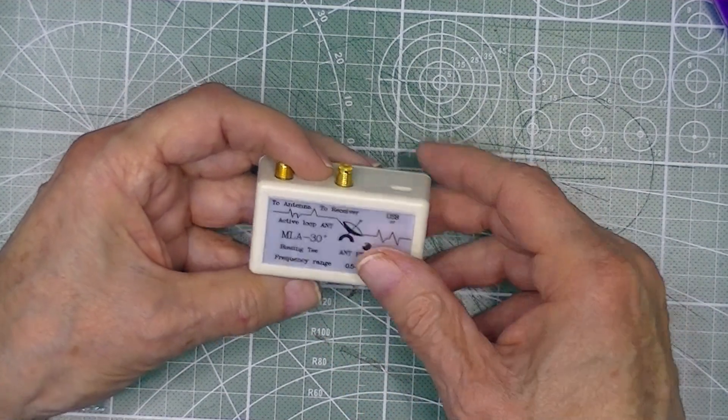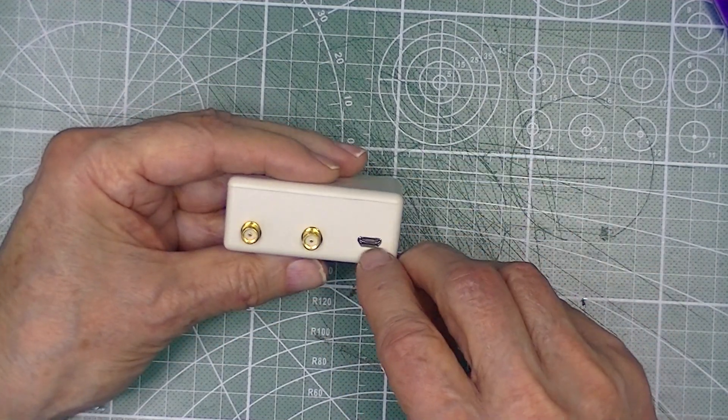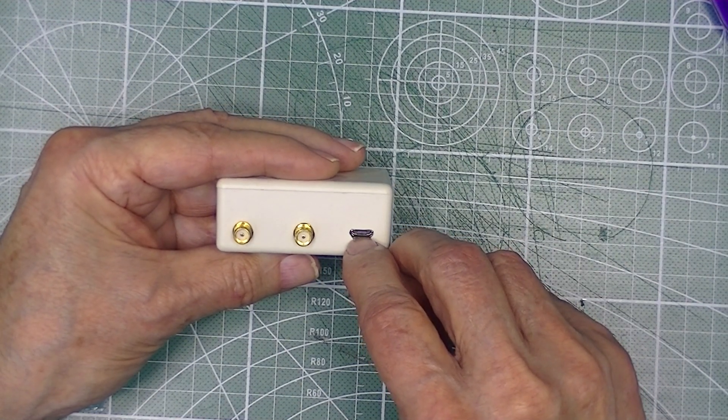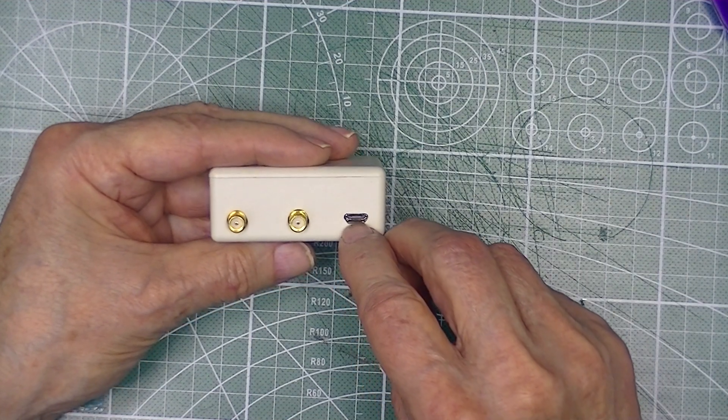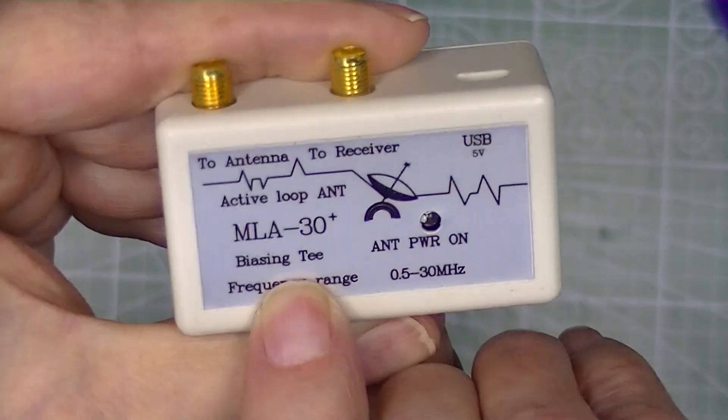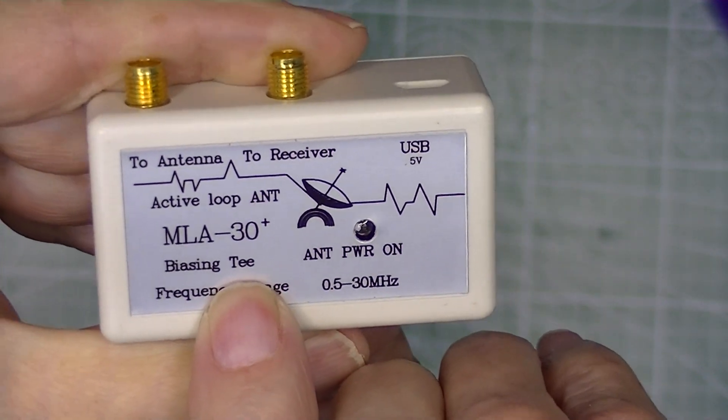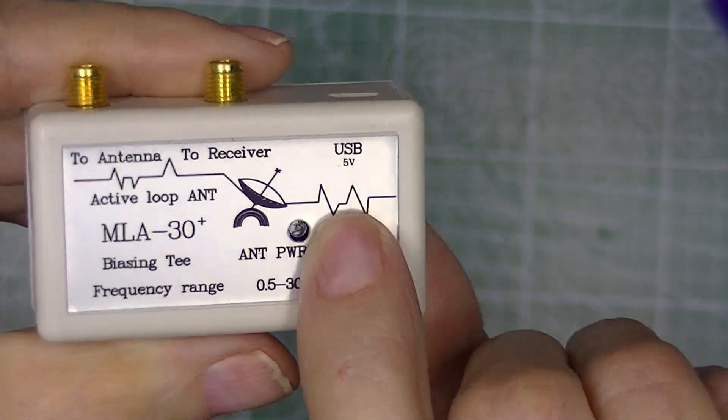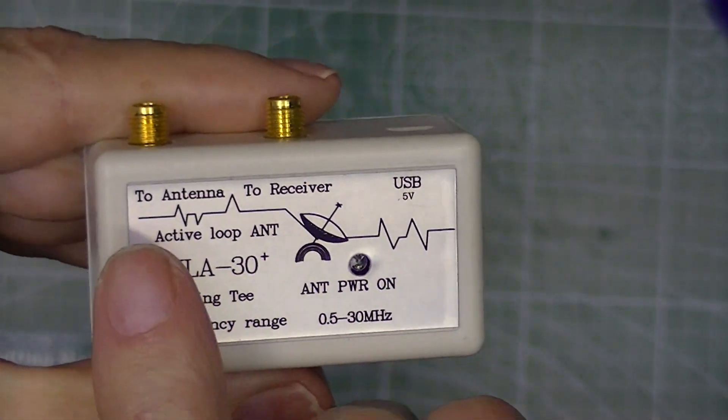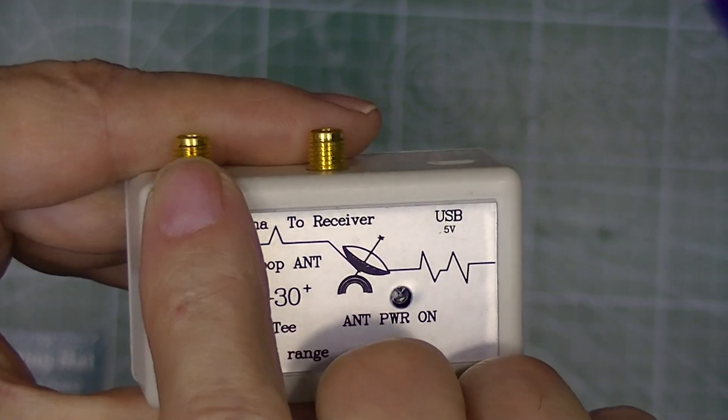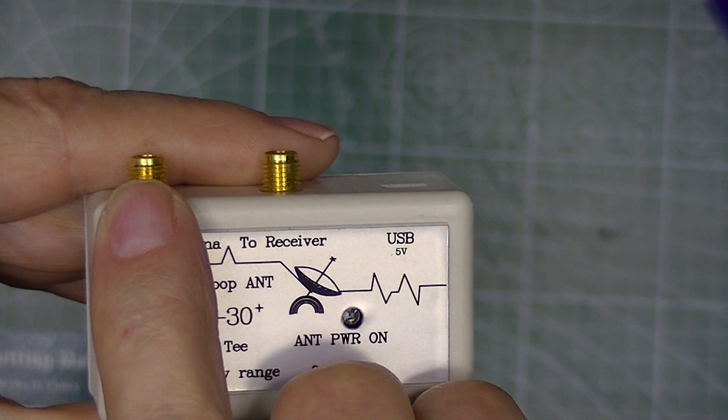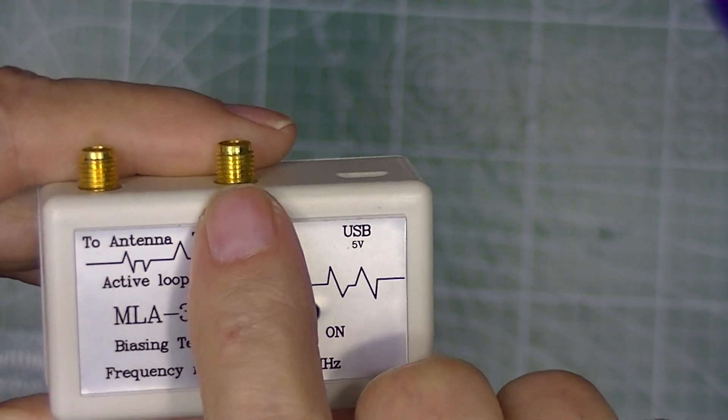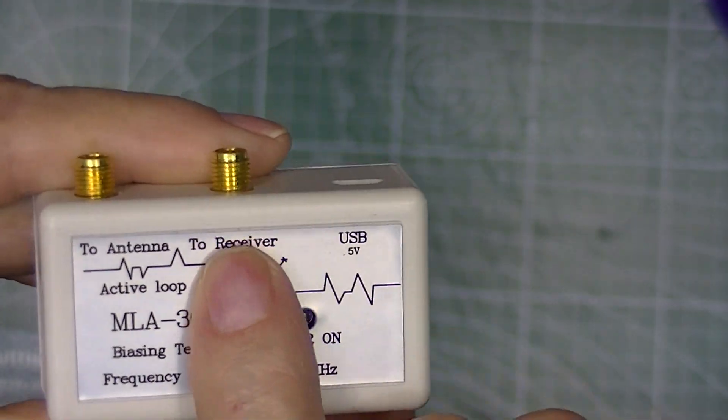Why do we do this? Because this is a little box that takes 5 volts from a micro USB, micro B connector. It's called a biasing T. This 5 volts is boosted to 12 volts internally and placed on the center of this, well, it's placed across this coaxial connector. There's a capacitor between these two that prevents the DC from going to the receiver.